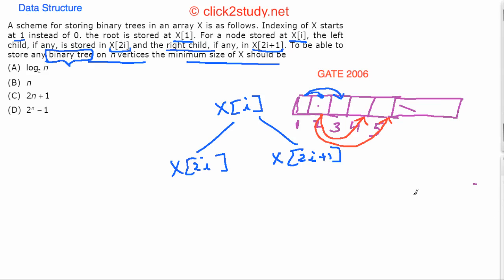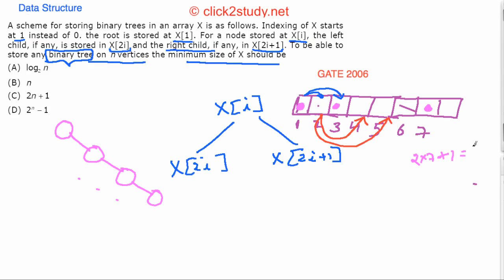Suppose you have a binary tree that has only right children — no left children at all. The root goes at index 1, its right child goes at index 3 (index 2 is empty), the child of that goes at 2×3+1=7, so indices 6 and 7. Then the right child of index 7 goes at 2×7+1=15. All the in-between spaces are wasted.